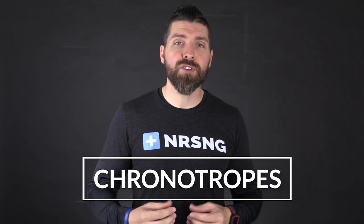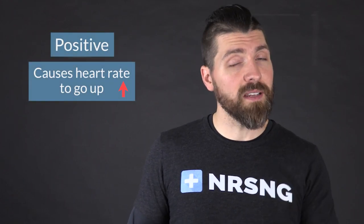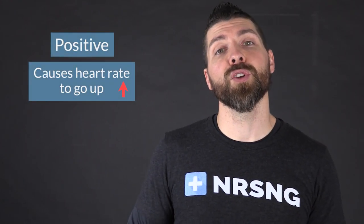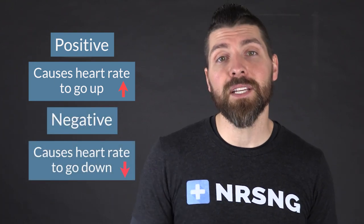Now that we've covered inotropes, let's look at chronotropes. Chronotropes deal with time. When we discuss chronotropic drugs, we are talking about drugs that influence the electrical conductive system of the heart — in particular, how these drugs influence how fast the heart beats. Just like with inotropes, we have positive and negative chronotropic drugs. Positive chronotropic drugs can cause the heart rate to go up, and with the negative ones they'll actually decrease that speed.